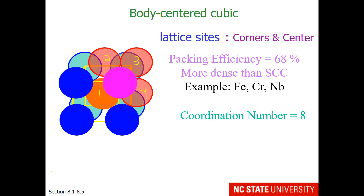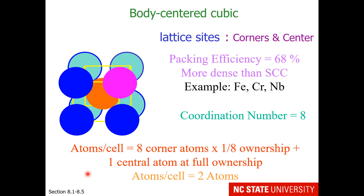If there is a layer of 4 atoms behind, there is also a layer of 4 atoms in front. These would be atoms 5, 6, 7, and 8 to give a coordination number of 8. In terms of how many atoms are in this unit cell, there are 8 corner atoms which are each one eighth inside the unit cell, and 1 central atom at full ownership, so there are 2 atoms per unit cell.